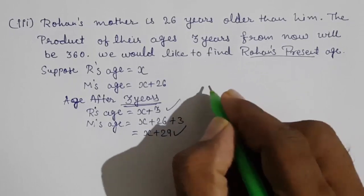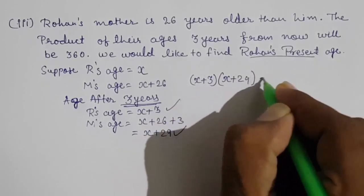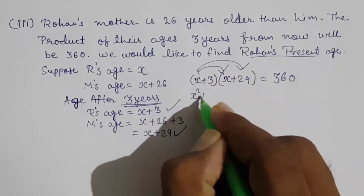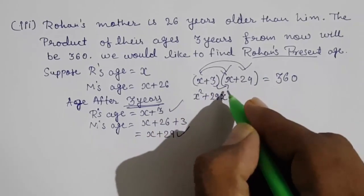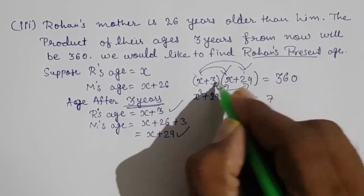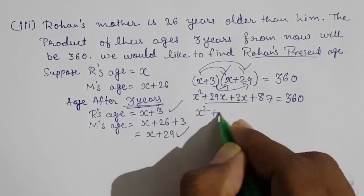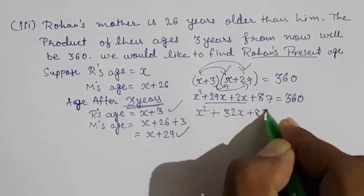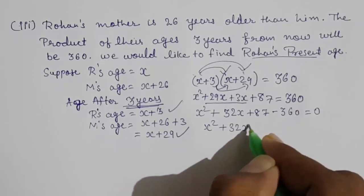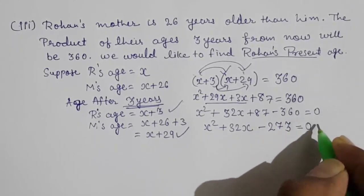The product of their ages after three years is 360, so (x + 3)(x + 29) = 360. Multiplying: x² + 29x + 3x + 87 = 360, which gives x² + 32x + 87 − 360 = 0, so x² + 32x − 273 = 0. This is the quadratic equation for Question 3.